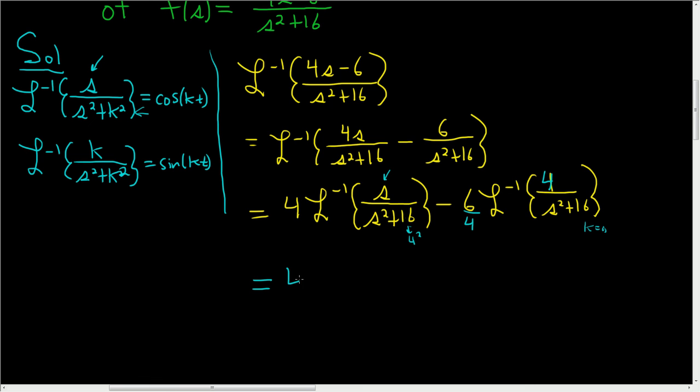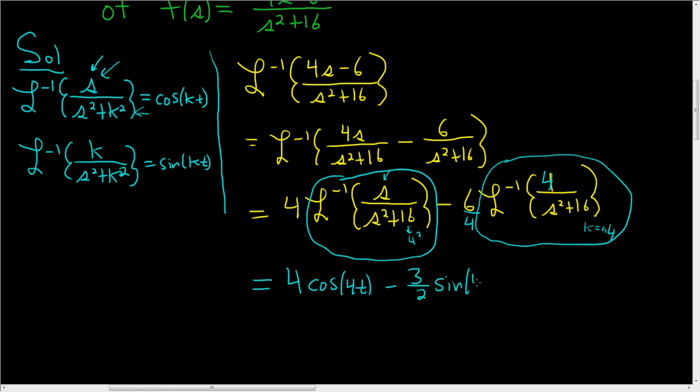So the answer, let's see, it's 4. And this guy here, it's going to be cosine of 4t because cosine has the s, right? So cosine of 4t. And then this is minus 3 halves. And this piece here, it's got the k up top. k is 4. So it's going to be sine of 4t. And that's it.